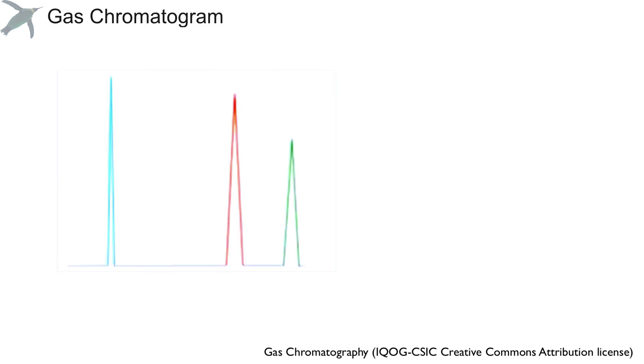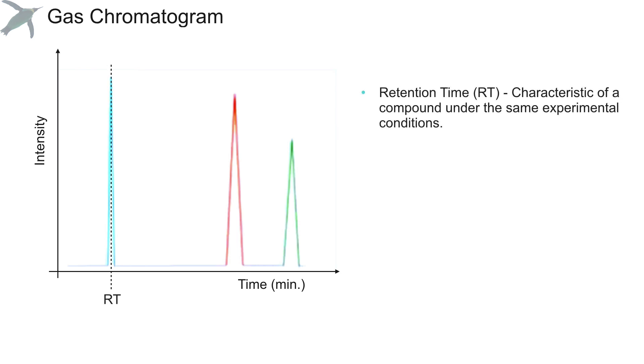Your gas chromatogram is a plot that has arbitrary intensity on the y-axis and time on the x-axis. The two main pieces of information that you can obtain from a gas chromatogram are the retention time, which is the time it takes the compound to travel down the column. The retention time is analogous to the RF in TLC, and it is characteristic of a compound under the exact same experimental conditions.